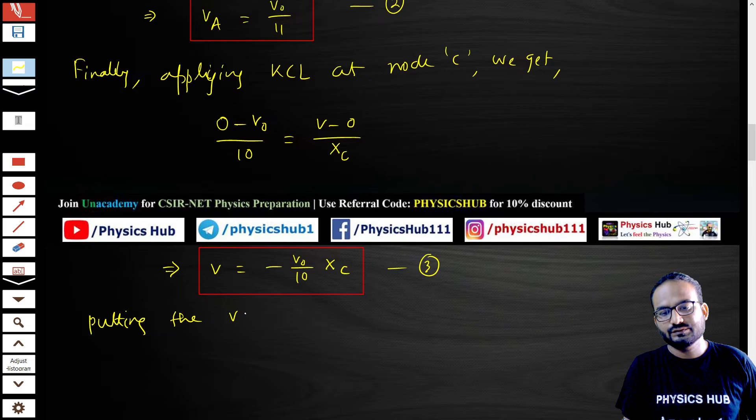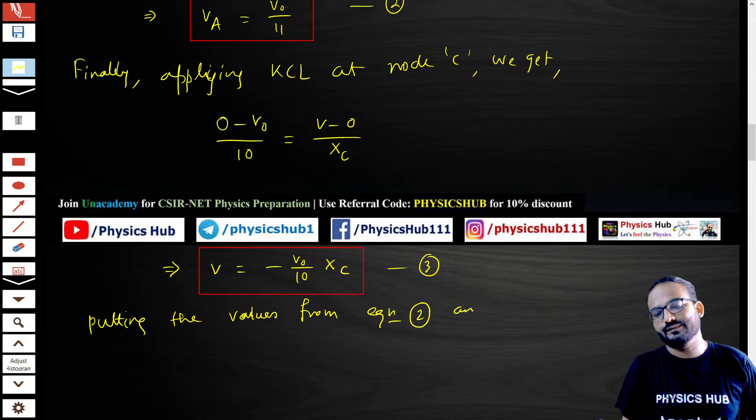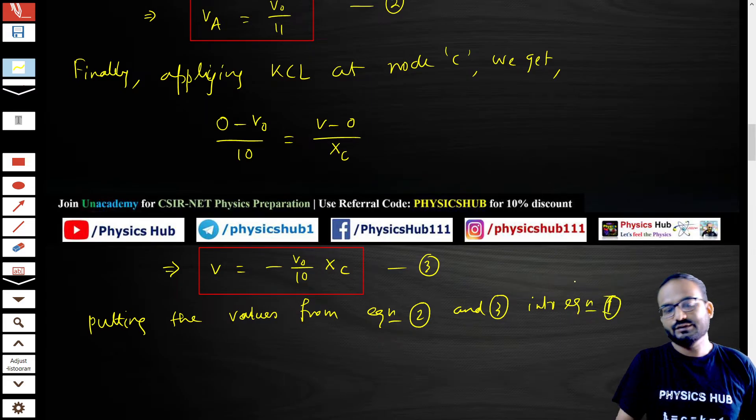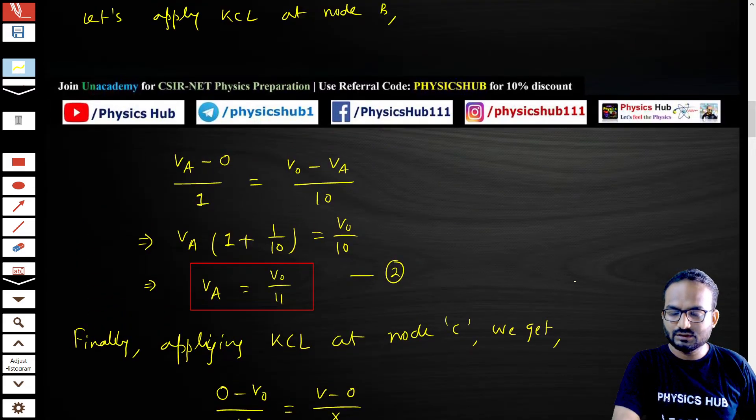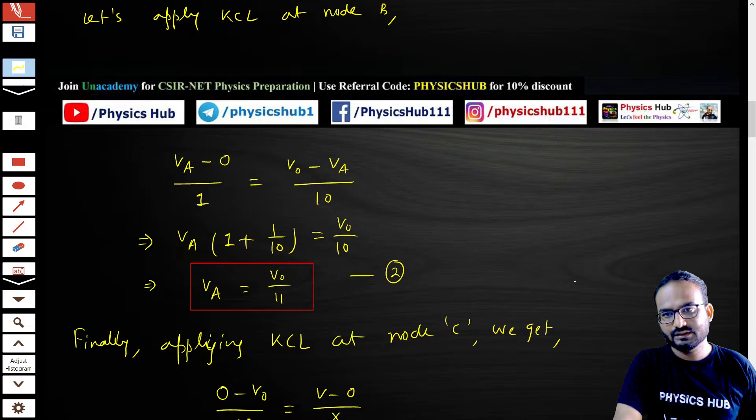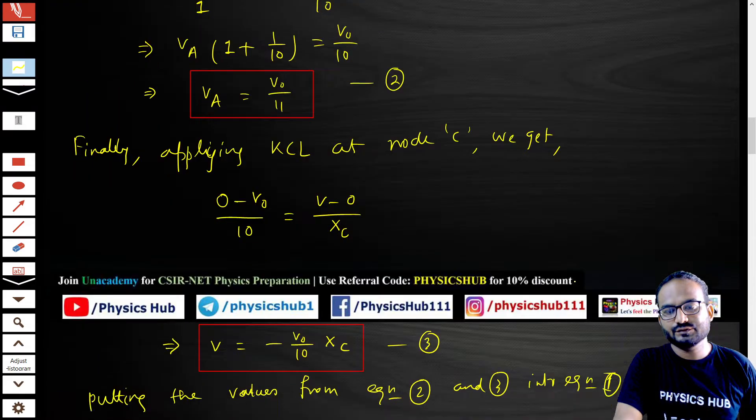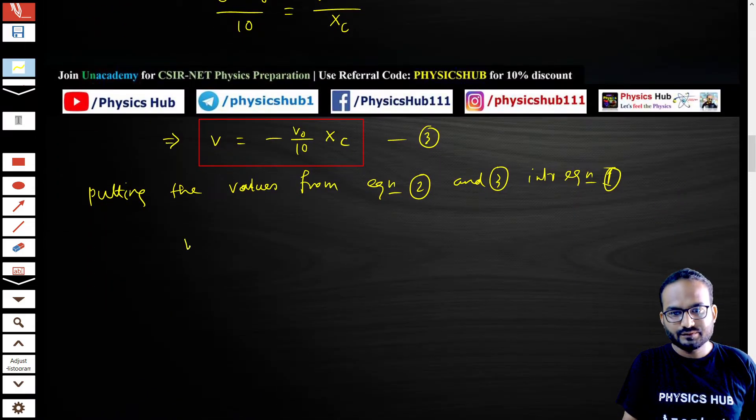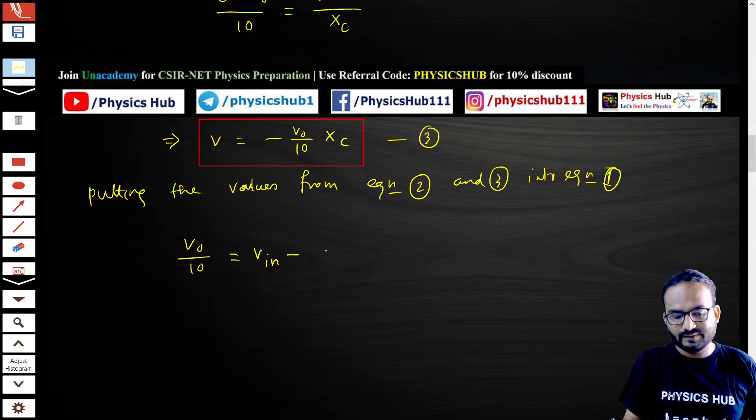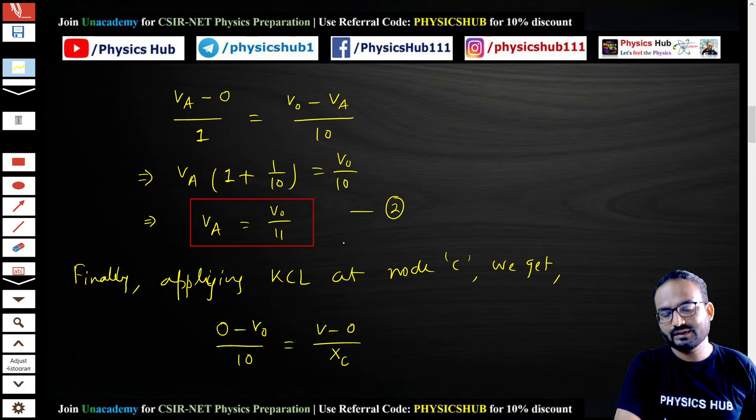Now if you substitute the values that we obtained from equation 2 and 3 into equation 1: 11 by 10 V_A, so V_A equals V_naught by 11, this will become V_naught upon 10 equals V_input minus V_naught times X_C by 10 times 10, which is 100.